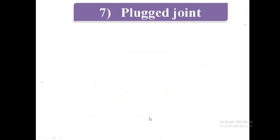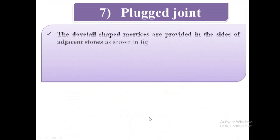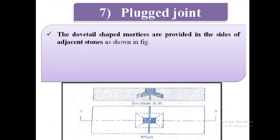The seventh type is plugged joint. In this type of joint, the dovetail shaped mortises are provided in the sides of adjacent stones as shown in figure. In this figure, we can see dovetail shape mortises are provided.